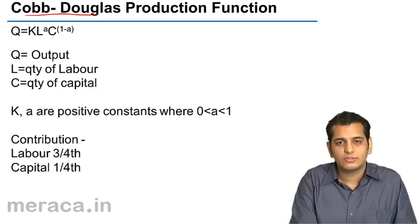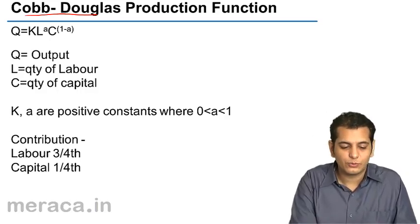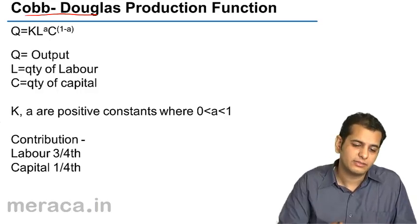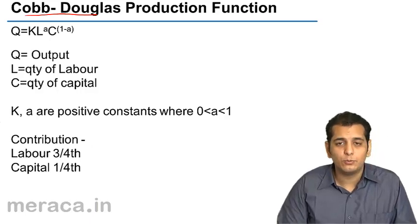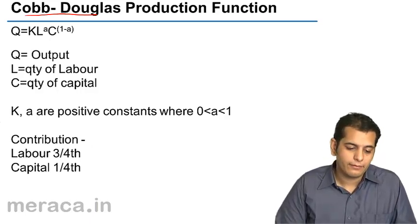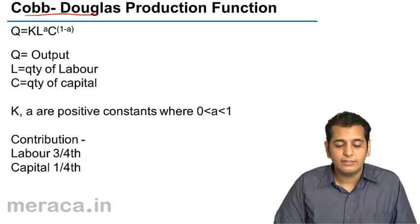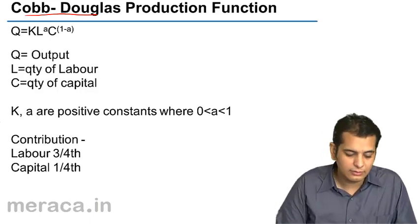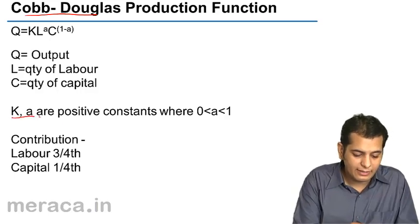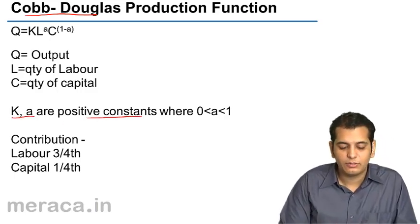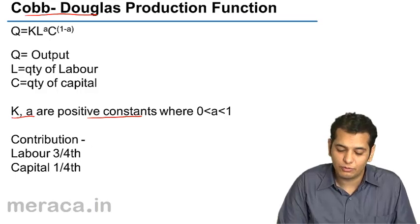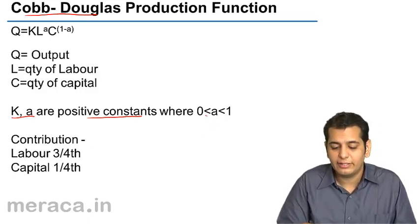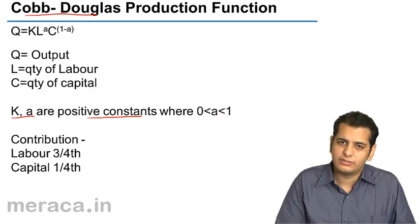Their production function is Q equals K into L raised to A into C raised to 1 minus A, where Q is the output, L is the quantity of labour, C is the quantity of capital, and K and A are positive constants. They are positive constants where A is between 0 and 1. A is greater than 0 but less than 1.